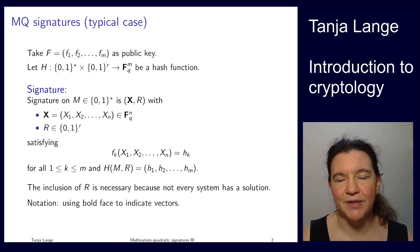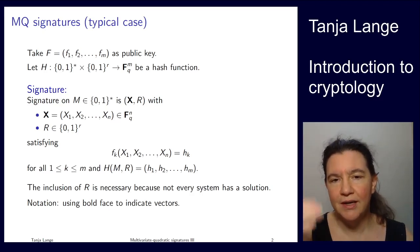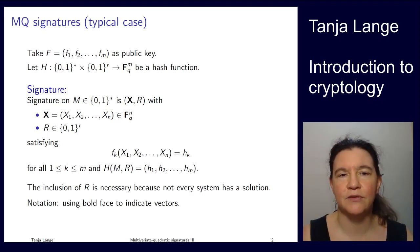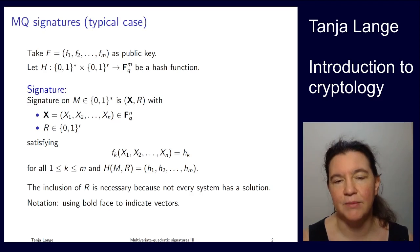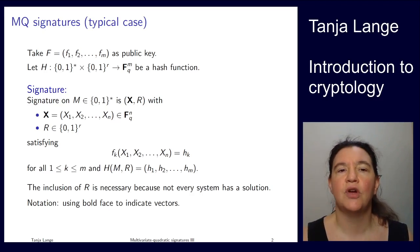In this last lecture about multivariate quadratic systems, we're getting back to what I presented as a typical case of signature systems where we have a system of equations. The signature is purely a pre-image to something defined by the message or a hash of the message. In order to compute such a pre-image, we must have a hidden structure in this system.